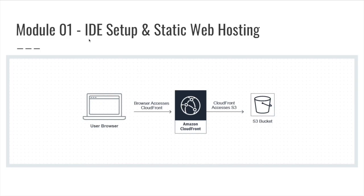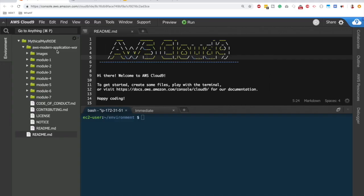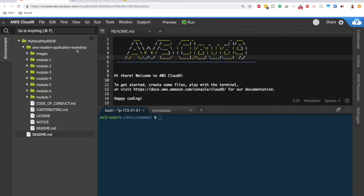Welcome to Part 2 of Module 1 implementation. In the first part we already set up the Cloud9 IDE and cloned the repository. Now let's do the implementation related to static web hosting — here's my Cloud9 IDE with the AWS Modern Application Workshop repository cloned.